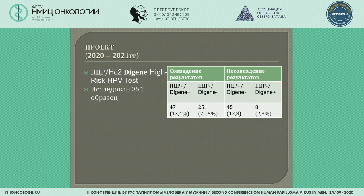We are at the beginning. As of today, we have examined 351 women. The coincidence between different methods regarding detection of HPV was found in 85% of cases, with a lack of coincidence in 15%. Cases of Digene positive and PCR negative results were observed.